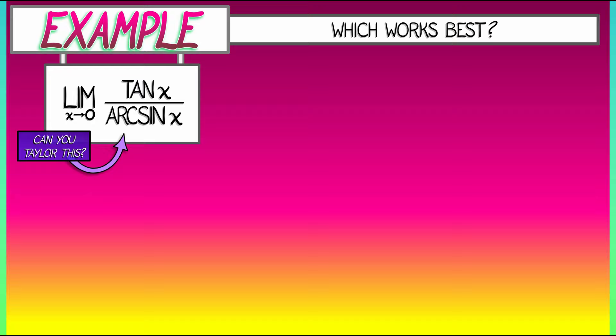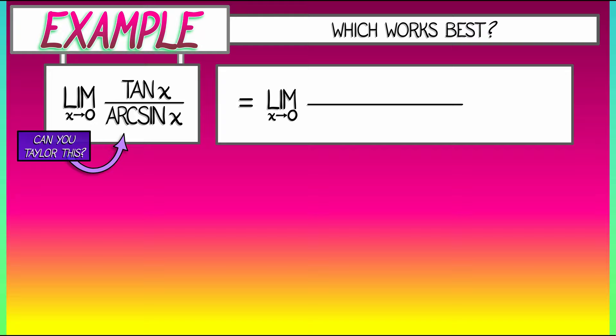I have the limit as x goes to zero of tangent of x, Taylor expanded about zero, is x plus x cubed over 3 plus 2 fifteenths x to the fifth plus a bunch of other stuff. Arc sine of x is x plus x cubed over 6 plus 3 fortieths x to the fifth, etcetera.